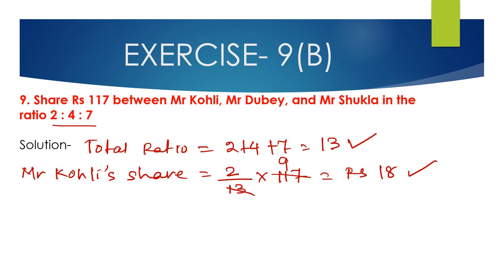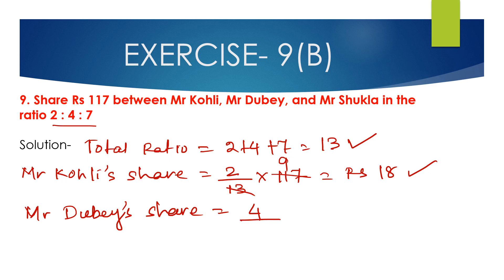Mr. Kohli's share is 18 rupees. Now, Mr. Dubai's share will be 4/13 multiplied by 117 rupees. Cancelling 13 and 117 — since 13 × 9 = 117 — we get 4 × 9 = 36 rupees.